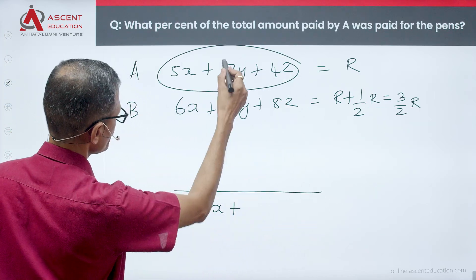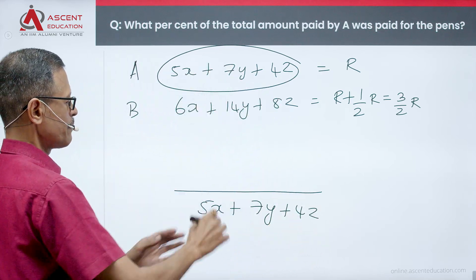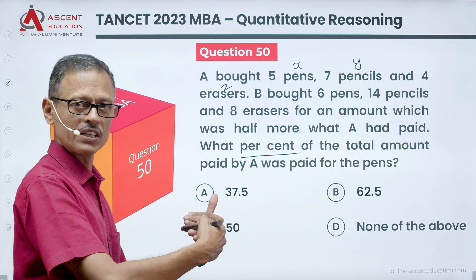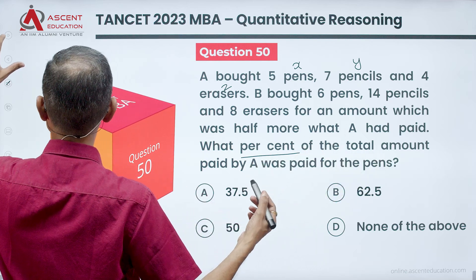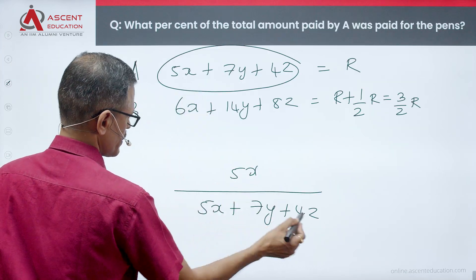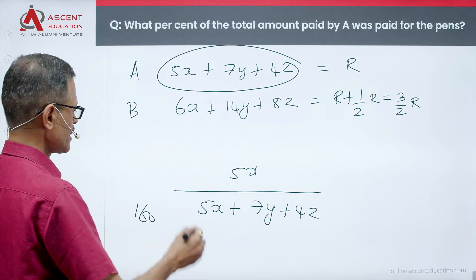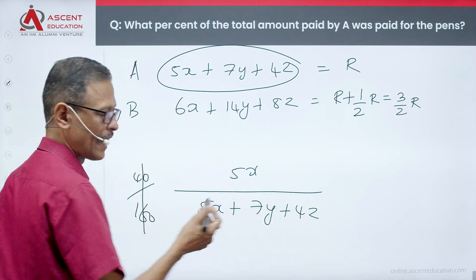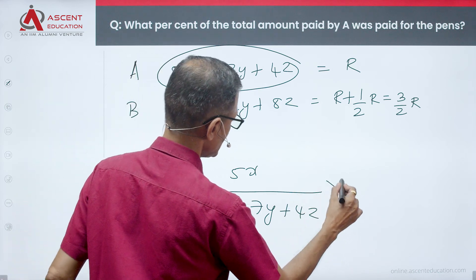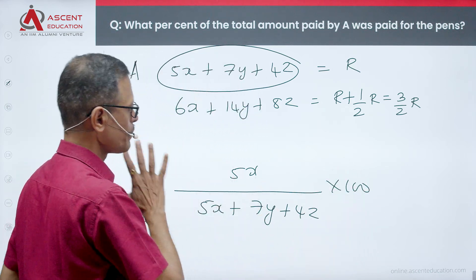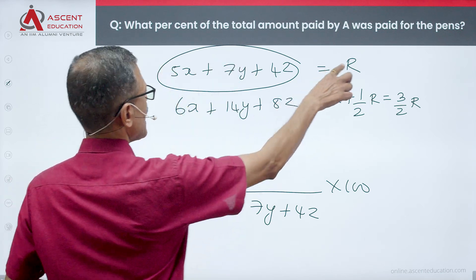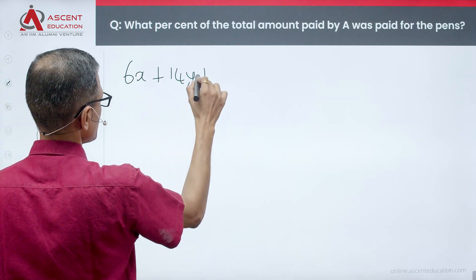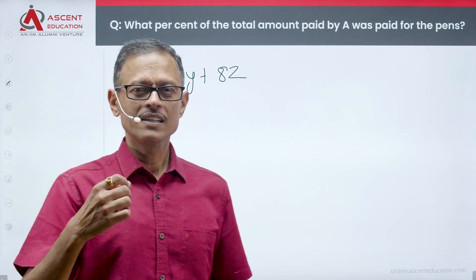The question asks: what percent of the total amount paid by A was paid for the pens? So we need to find 5x as a percentage of A's total. We are trying to find 5x divided by the total, into 100. B's equation is 6x + 14y + 8z = 1.5R. We have two equations and three variables.